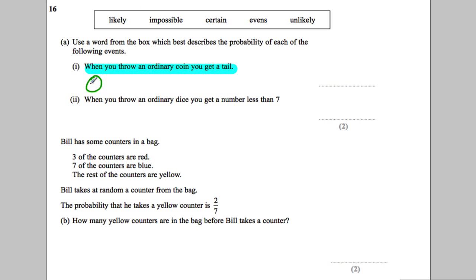When you throw a coin, there are two options. You either get a head or you get a tail. The probability of a tail is one out of a total of two options, so it's a half. Which one's a half? It's evens.